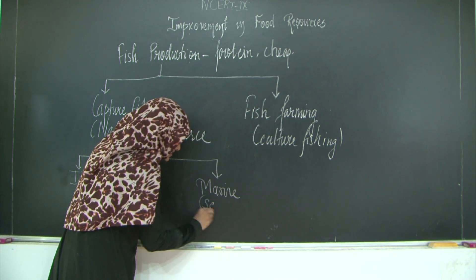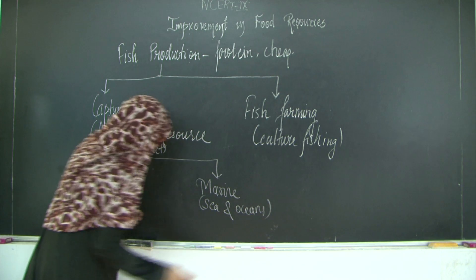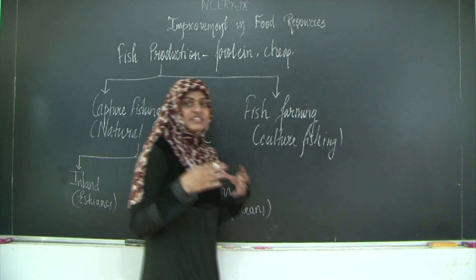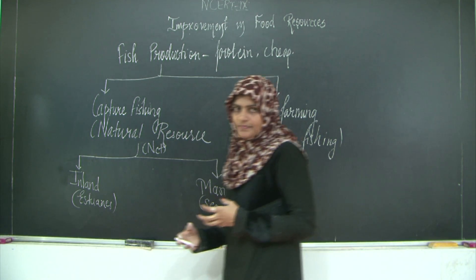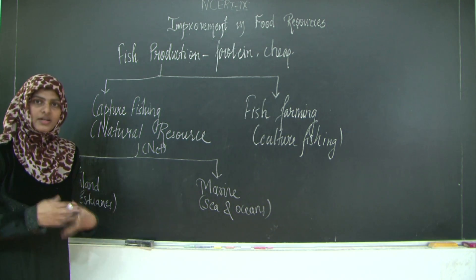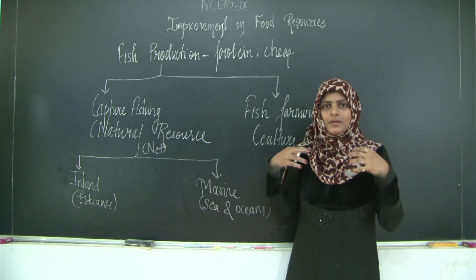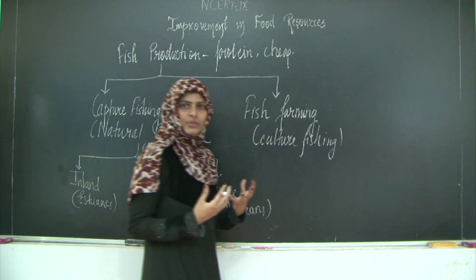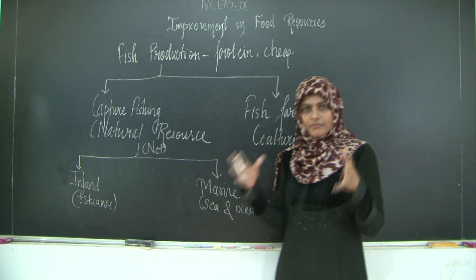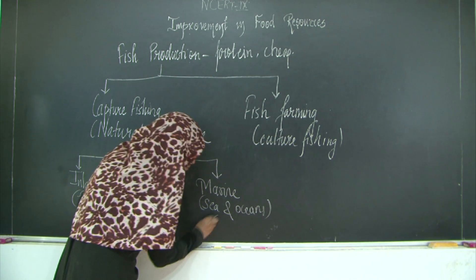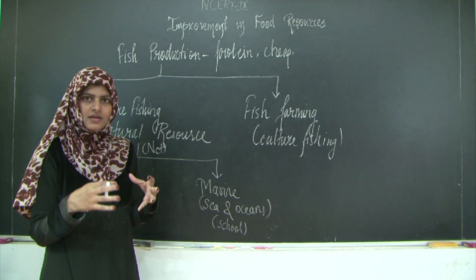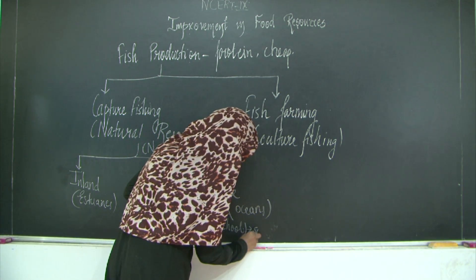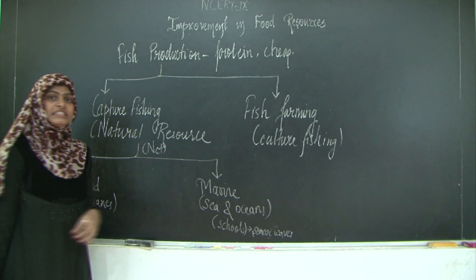For marine fishing, we go to seas and oceans. Inland fishing is generally done in estuaries - the place where sea water meets river water - which is a very rich source where you get maximum amounts of fish. Both are done by net, but due to modern techniques we now have sonar waves, which can detect where a school of fish is - the maximum concentration of fish - in the oceans and seas.